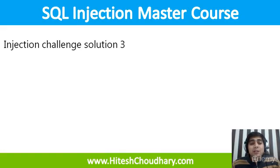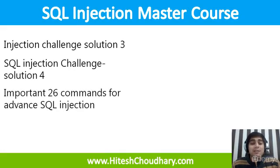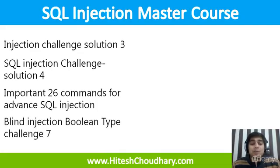We'll move on to injection challenge and solution three, and other challenge aspects for you to solve — and of course I'll also solve them in the same video. After that, challenge solution four will have a new twist in the injection series. Then we'll learn 26 important commands that will help you get SQL injection in any web application. These important commands will help you get into a Boolean type of injection, which will be challenge seven with solution as well. These blind injections are really powerful and quite common.